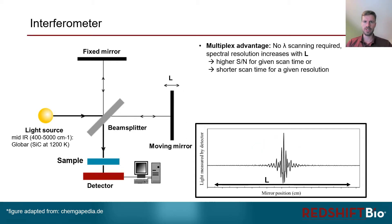There are three major advantages of such a setup over dispersive instruments. The first is the so-called multiplex advantage, which means that no frequency scanning is required, since the whole spectral information is contained in the interferogram. Increasing L — the range of the moving arm — increases the spectral resolution, meaning a higher signal-to-noise for a given scan time, or a shorter scan time for a given resolution.